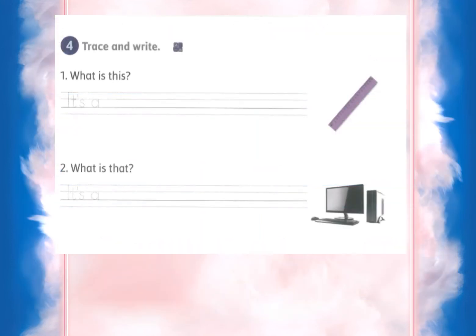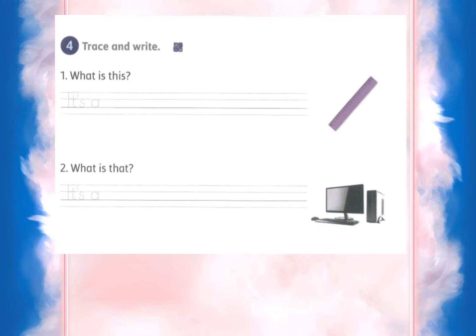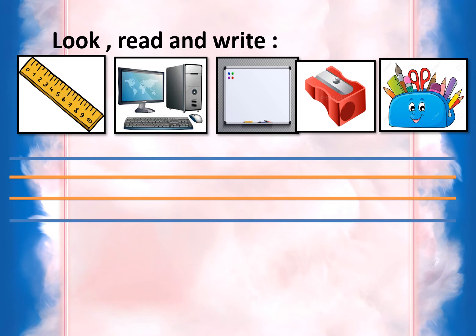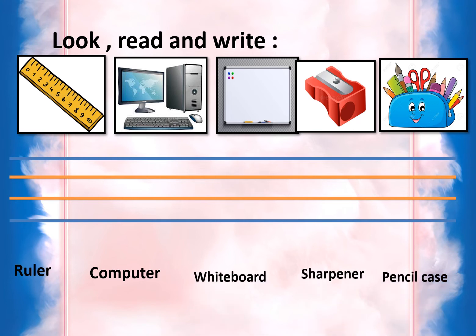Now for homework: what is this? It's a ruler — R-U-L-E-R. What is that? It's a computer — C-O-M-P-U-T-E-R. We also do an exercise where we write the words under the pictures. What is this? This is a ruler. Picture two: a computer. Picture three: whiteboard. Picture four: sharpener. Last picture: pencil case.